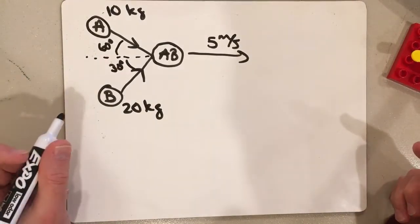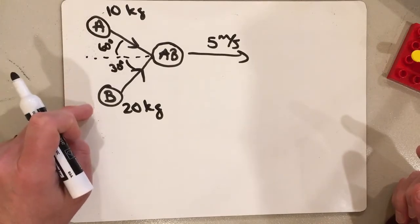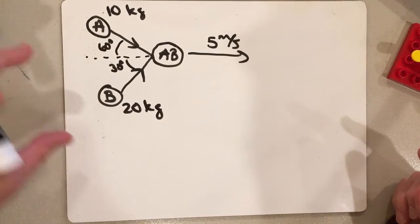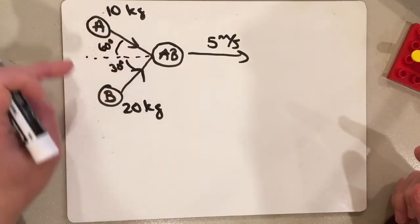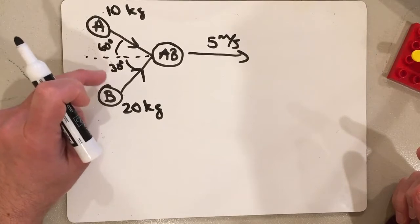Let's look at a two-dimensional collision. Here I have objects A and B. A has a mass of 10 kilograms, B has a mass of 20 kilograms. Their initial velocities are 60 degrees to the horizontal and 30 degrees to the horizontal, respectively.